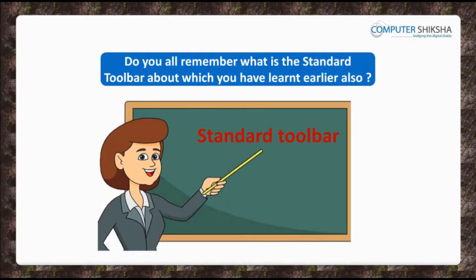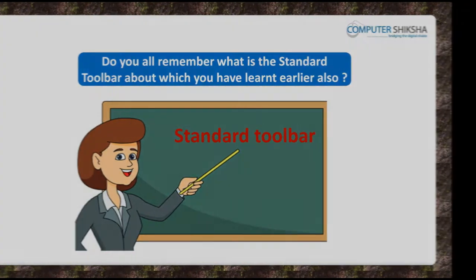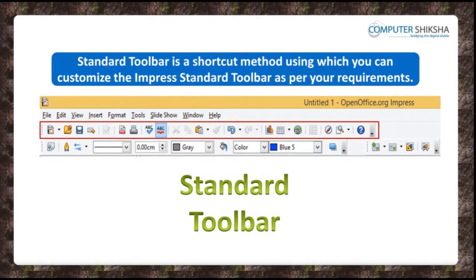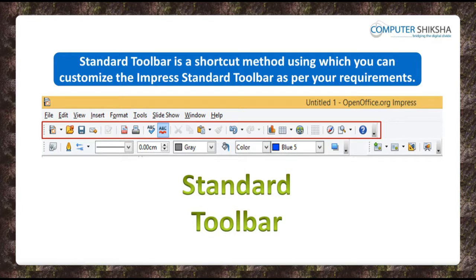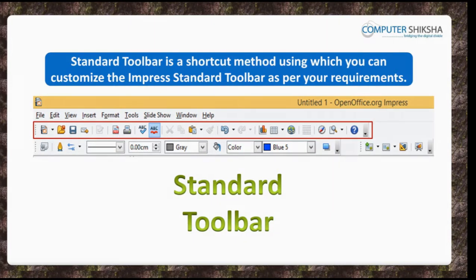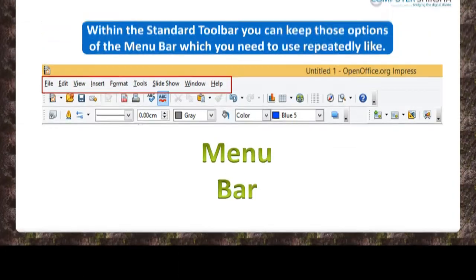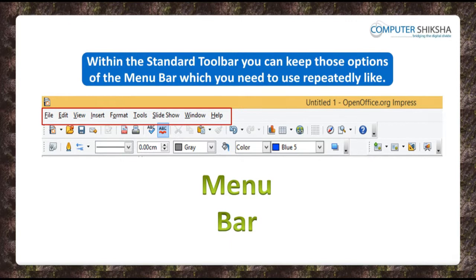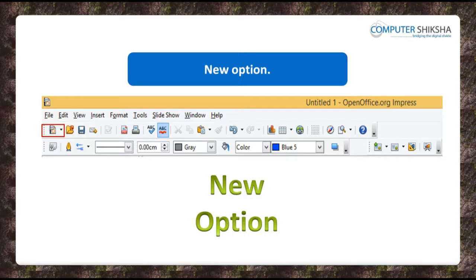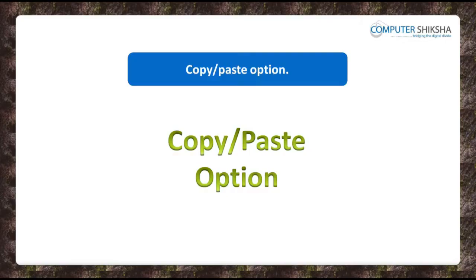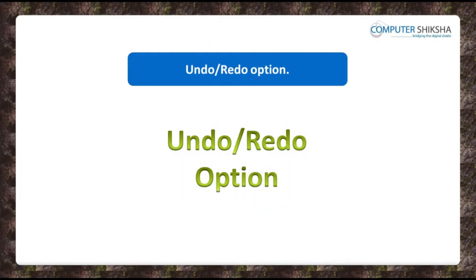Do you all remember what the Standard Toolbar is? The Standard Toolbar is a shortcut method using which you can customize the Impress standard toolbar as per your requirements. Within the standard toolbar, you can keep those options of the menu bar which you need to use repeatedly — like New, Open, Save, Copy, Paste, Undo, Redo, etc.